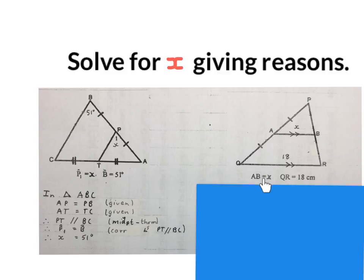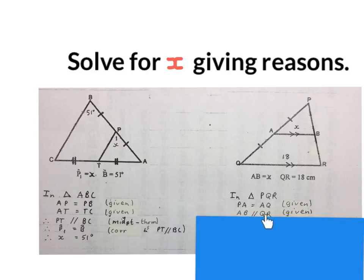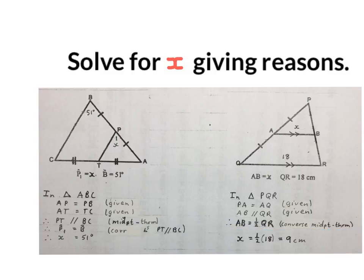For the second problem, they gave us a triangle with AB equal to X and QR equal to 18. Solve for X and give reasons. In triangle PQR: PA is equal to AQ — given; AB is parallel to QR — given. Therefore AB is half of QR — converse midpoint theorem. So X is half of 18, which is 9 centimeters. Please stop the video and get your brain around these two problems. Please indicate whether you liked or disliked the video and subscribe to the channel. Enjoy geometry!